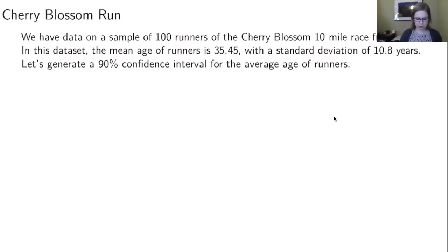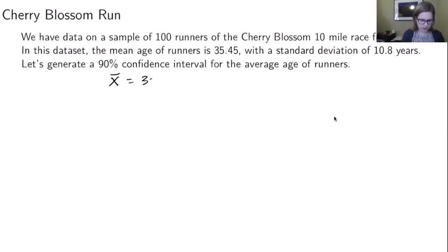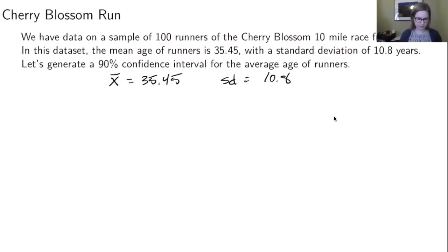Let's do an example. I have data on a sample of 100 runners in the Cherry Blossom 10-mile race from 2019 — a race in Washington, DC. In the data set, the mean age of runners, x bar, is 35.45, and the standard deviation is 10.8. We're going to create a 90% confidence interval for the average age of runners.